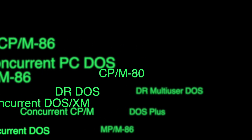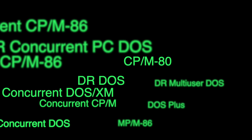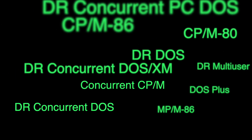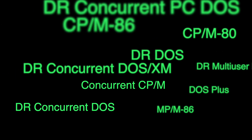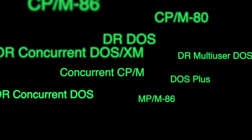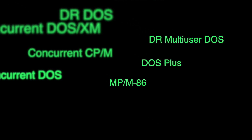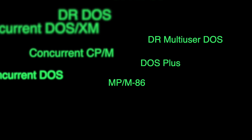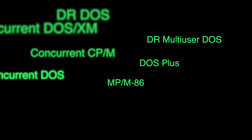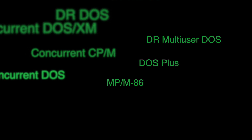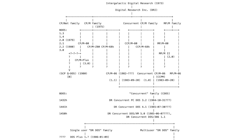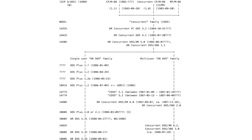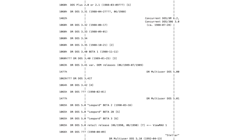Especially during the 80s period, it reads like CPM-80, CPM-86, concurrent CPM-86 and MPM-86, DR Concurrent PC DOS, DR Concurrent DOS, Concurrent DOS XM, DOS Plus, DR DOS Concurrent DOS, DR Multi-User DOS and what not. Someone then actually put together a fairly complete timeline, tracing the BDOS versions and lining them up chronologically with the different products.